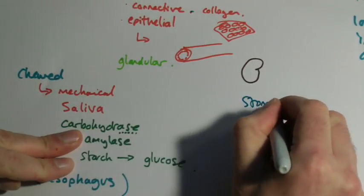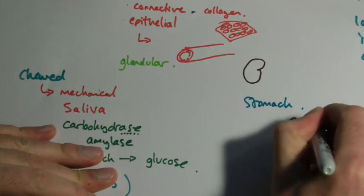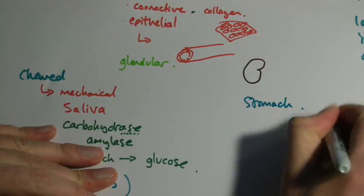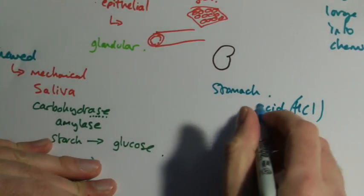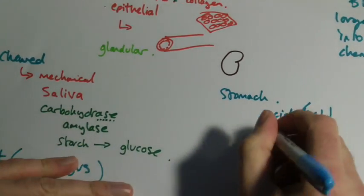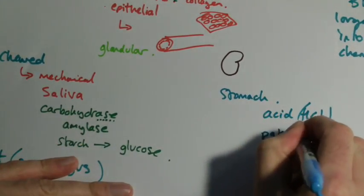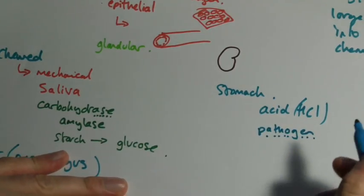Now the bits of the stomach that are of interest to us in particular. We've got this acid, which is actually hydrochloric acid, which does two things. It will basically destroy most of the bacteria and fungi. Pathogens is a good word here. Pathogen means something that causes disease.